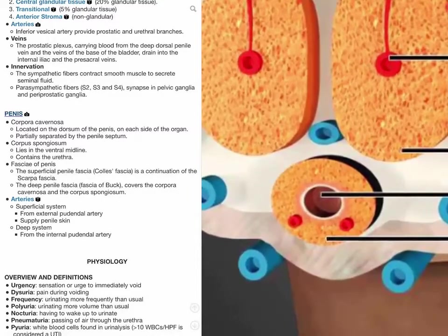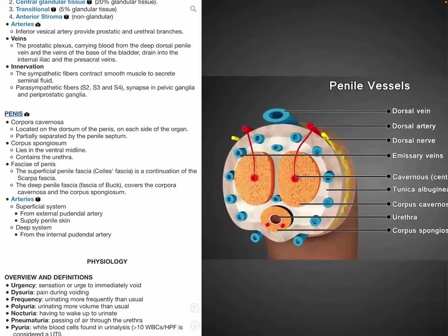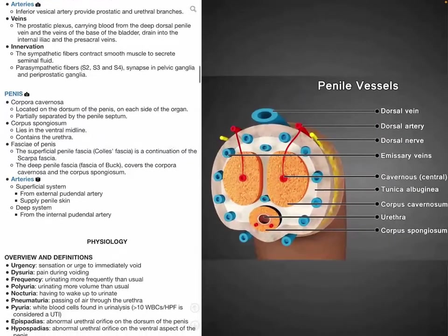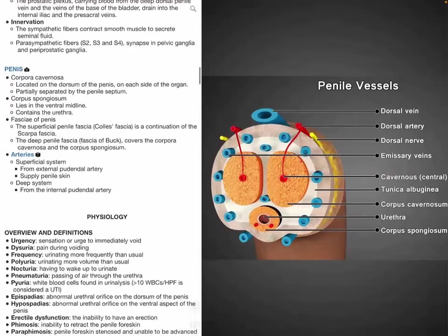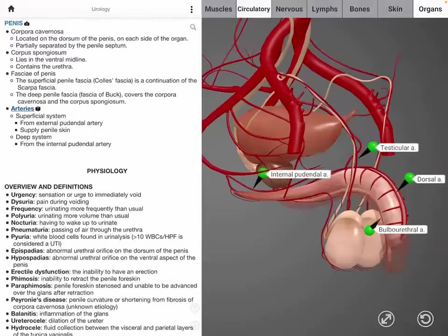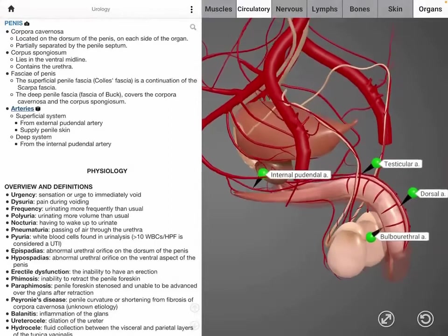The superficial fascia of the penis is known as Colles' fascia, which is a continuation of Scarpa's fascia from the abdomen. The deep penile fascia is a continuation of Buck's fascia from the abdomen, and it surrounds the corpus cavernosa and spongiosum. The blood supply to the penis is mainly supplied by the branches of the external and internal pudendal artery.